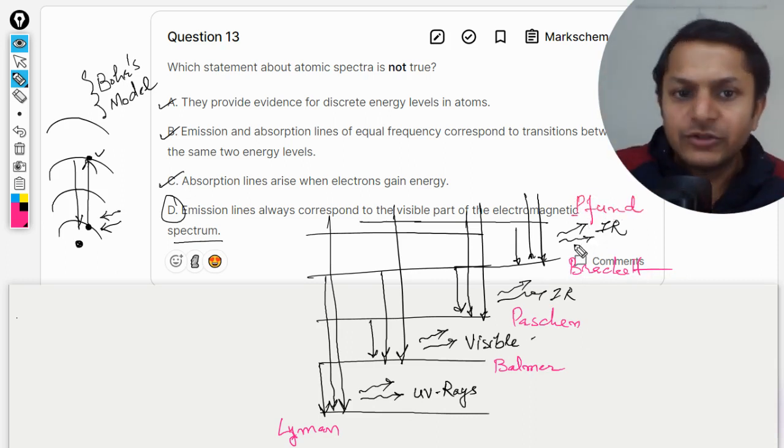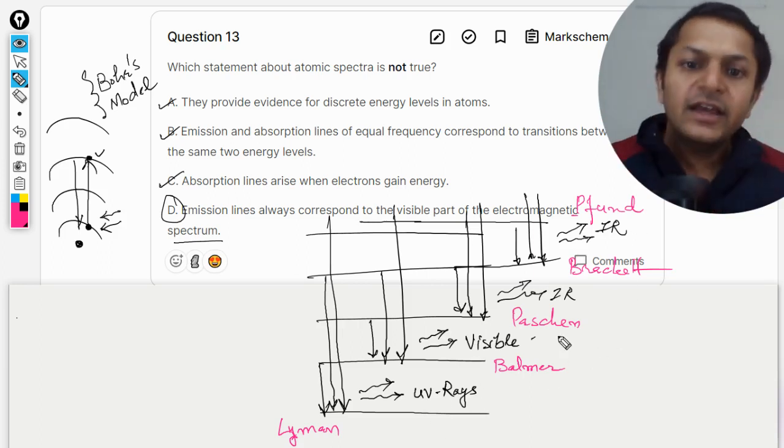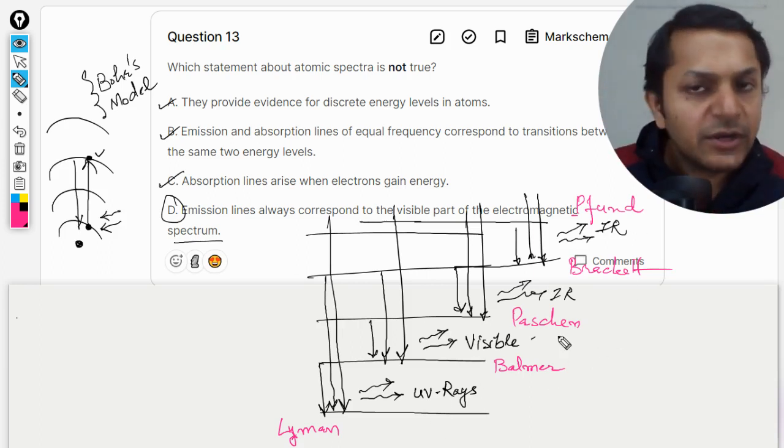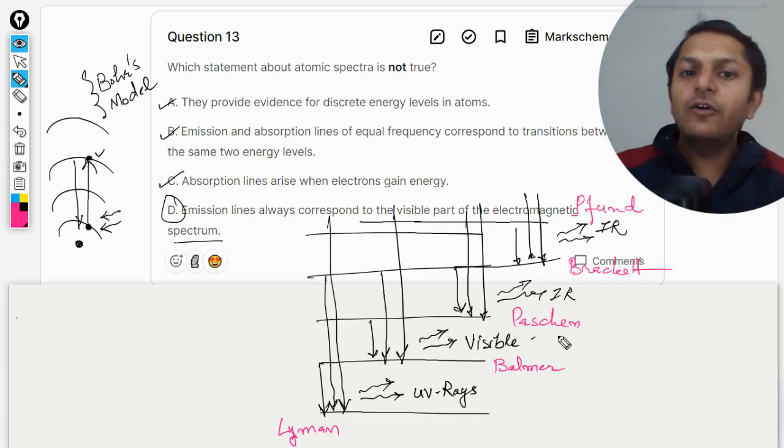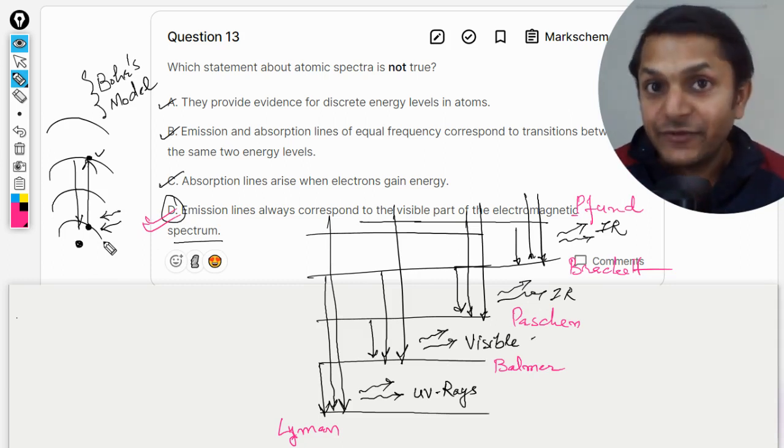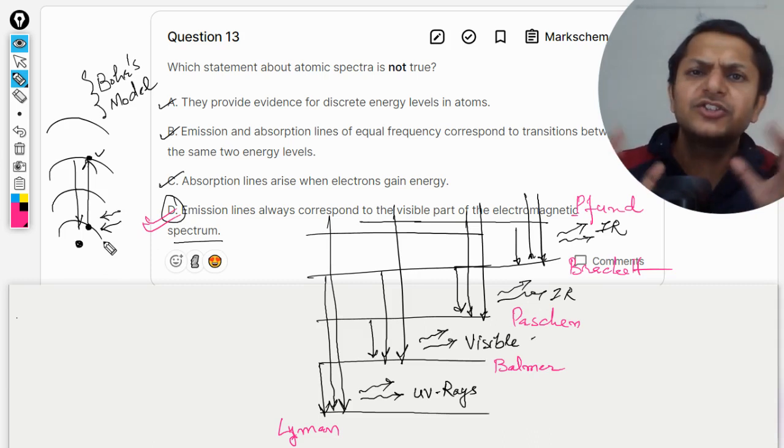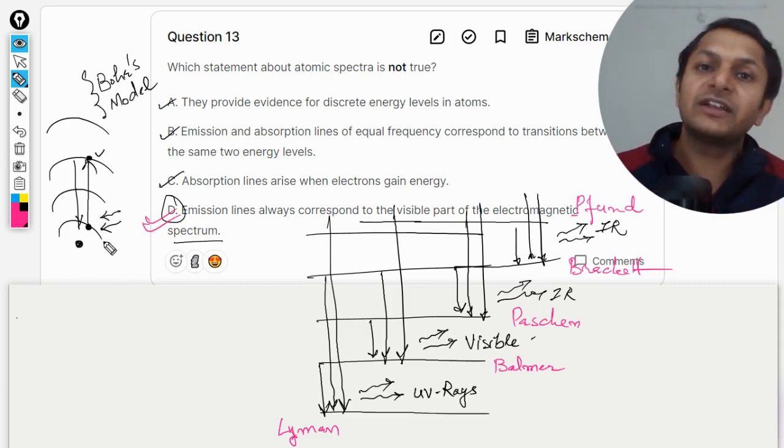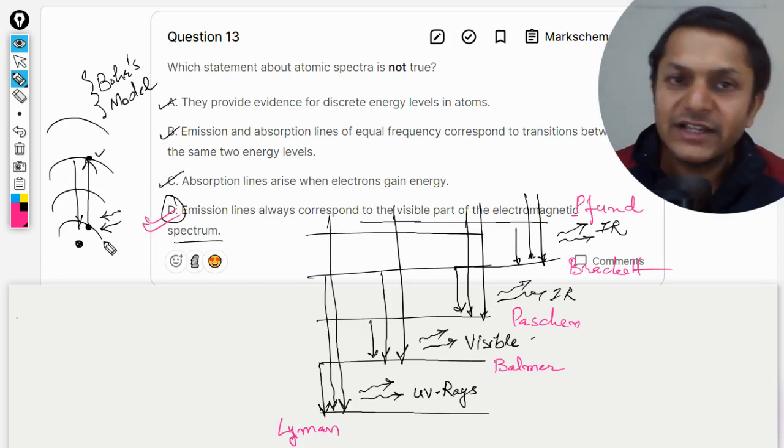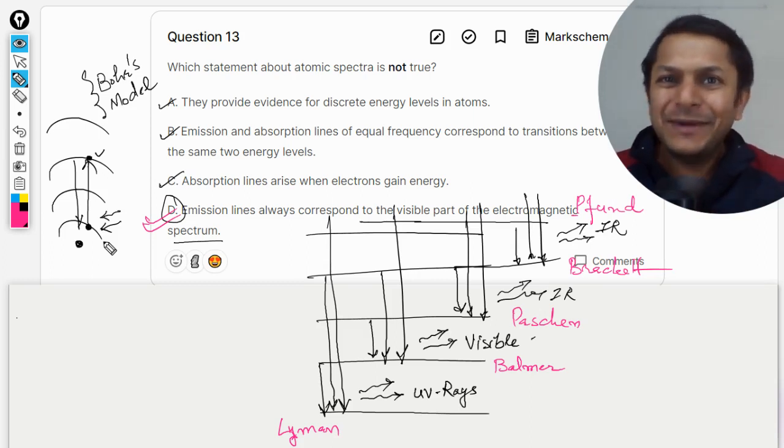So these are the five series and these are the radiations which are produced in this. So this is how we do this question, mighty student, and answer for our question will be D. This is Professor Varun. Please subscribe to the YouTube channel. Please join the YouTube channel because you would be getting so many other things. You're going to access the Paper Two questions and you would be participating in the Kahoot test also if you are a subscriber to the YouTube channel. All the best, bye.